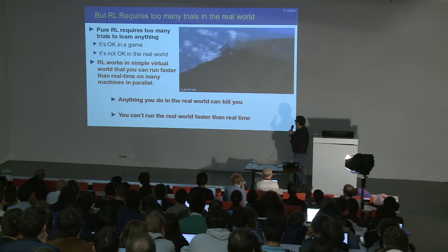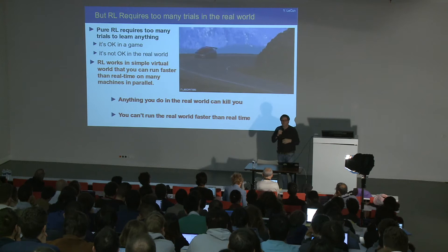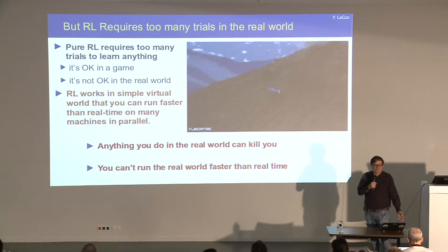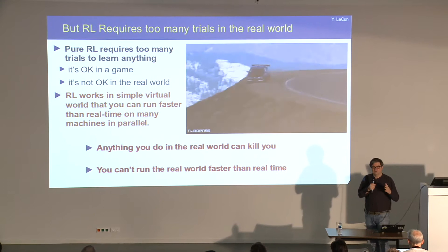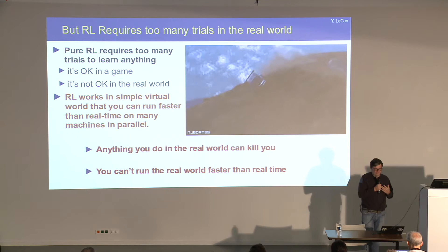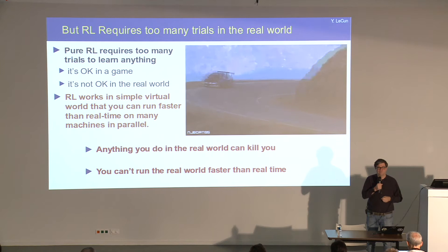If you used reinforcement learning to train a car to drive itself, it would have to drive for millions of hours and cause tons of accidents — it's just not practical. People do it in simulation, which kind of works, but simulators are not very accurate, and there's a problem of transferring from simulation to the real world. The big mystery is how humans can learn to drive a car in about 20 hours of training without causing any accident.